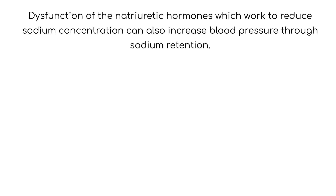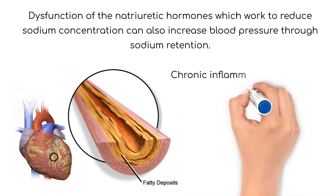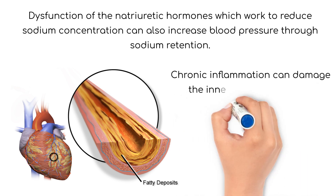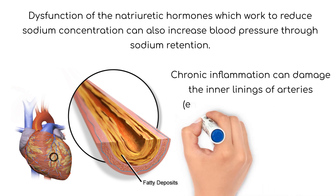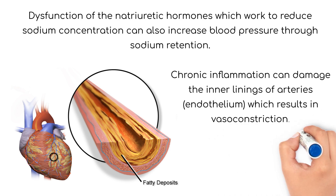Chronic inflammation can contribute to hypertension by way of damage to the inner lining of arteries, the endothelium. Chronic inflammation can lead to a decrease in inflammatory chemicals that promote vasodilation, which then facilitates vasoconstriction.